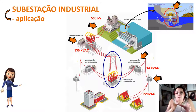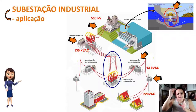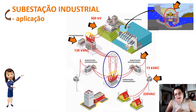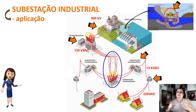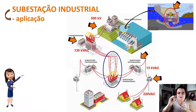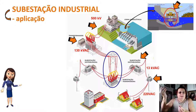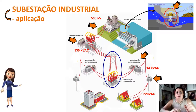No poste existe um transformador que rebaixa de 13 mil para 220 volts para alimentar a sua casa. Se a sua casa é 110 volts, é porque entra uma fase de 220 volts alimentada com um neutro e, na condição fase-neutro, gera 110 volts. Mas entra 220 volts na sua casa.